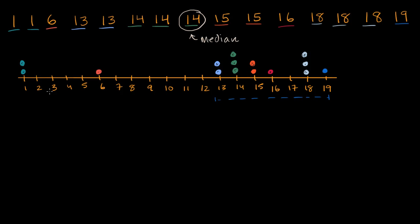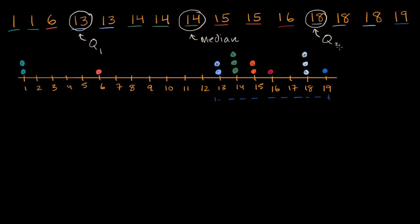Now what is Q1? Q1 is going to be the middle of this first group. This first group has seven numbers in it, so the middle is going to be the fourth number — it has three to the left and three to the right. So that is Q1. And then Q3 is going to be the middle of the upper group, which also has seven numbers in it, with three on either side. So that is Q3.